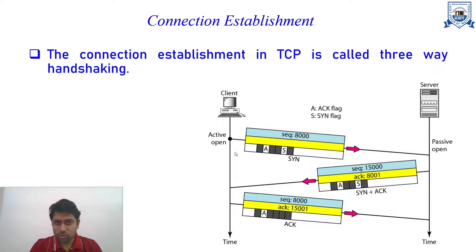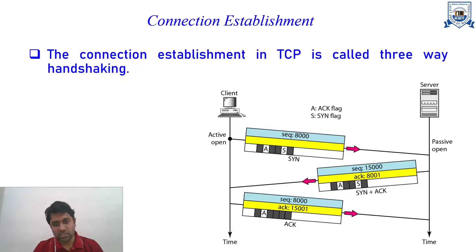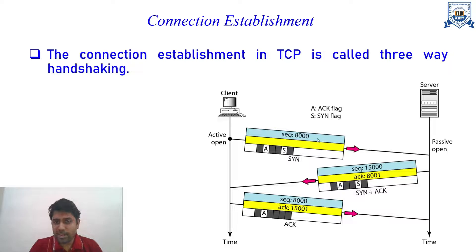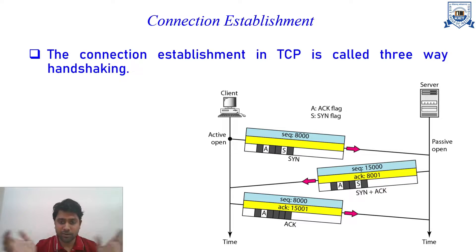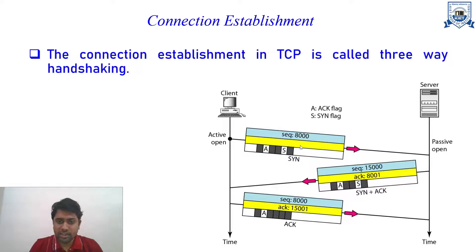The client wants to establish a connection with the server, so the client is active while the server is passive — it will not initiate any connection. The client sends the first request by setting the SYN bit to 1. The client selects a specific sequence number from the available 32-bit sequence space — for example, 8000 — and transmits it. Any number from the pool can be selected, allowing different sequence numbers for different communications with different servers.